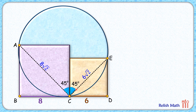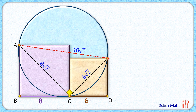The combined angle at C is therefore 90 degrees. Now joining A and E, we look at right angle triangle ACE. Applying the Pythagorean theorem, we get AE — the hypotenuse — as 10√2 centimeters. AE is also a chord in the circle, sustaining an angle of 90 degrees at the circumference.